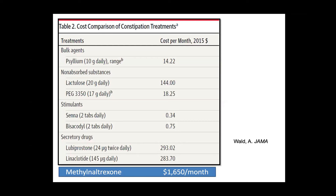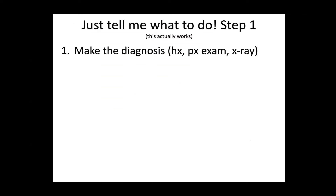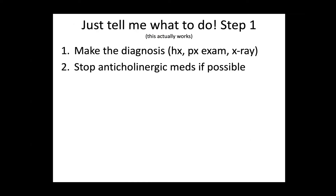This table shows cost comparison — polyethylene glycol for a month is $18, lactulose is $144, secretory drugs $300 a month, senna 34 cents a month. Remember that even if your patients are insured, many are paying large deductibles and copays, so what you prescribe is coming right out of their pocketbook. You really need to know what these things cost when prescribing. Make the diagnosis via history, physical, and X-ray if necessary, then check how many anticholinergic drugs your patient is on and stop as many as you can.